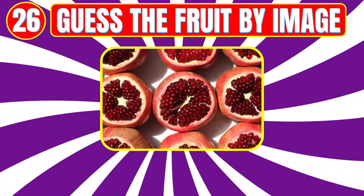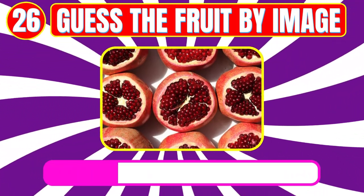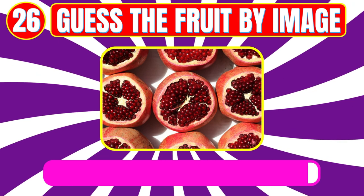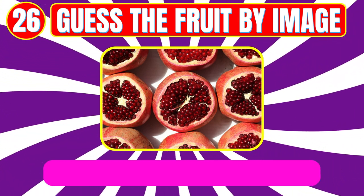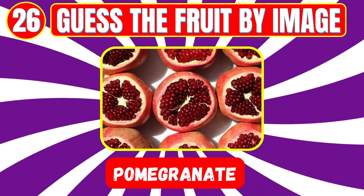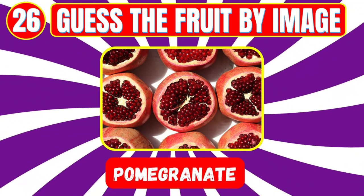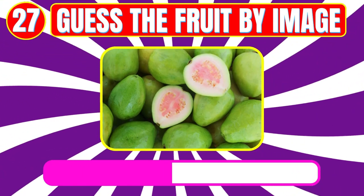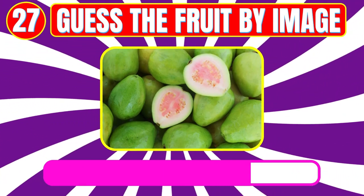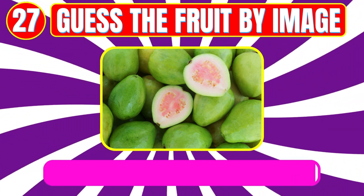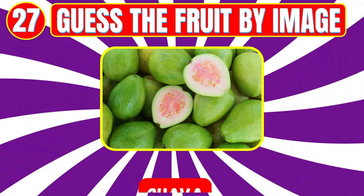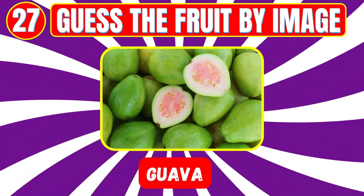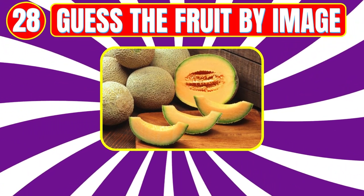Level number twenty-five. Guess the fruit by image. Fruit name is grapefruit. Level number twenty-six. Guess the fruit by image. Fruit name is pomegranate. Level number twenty-seven. Guess the fruit by image. Fruit name is guava.